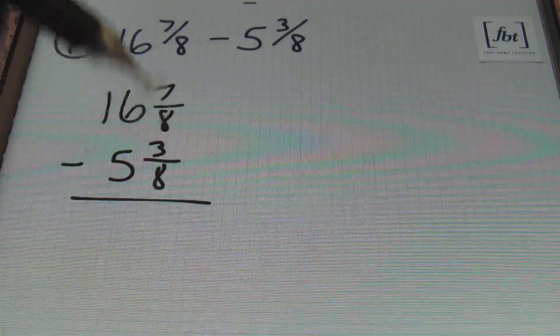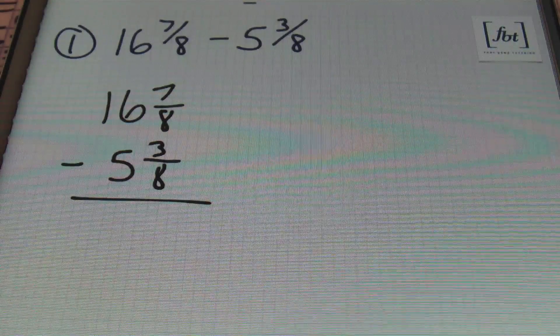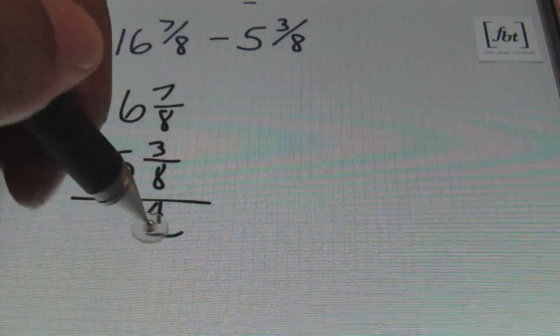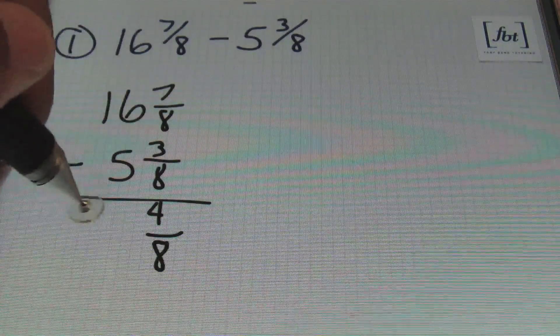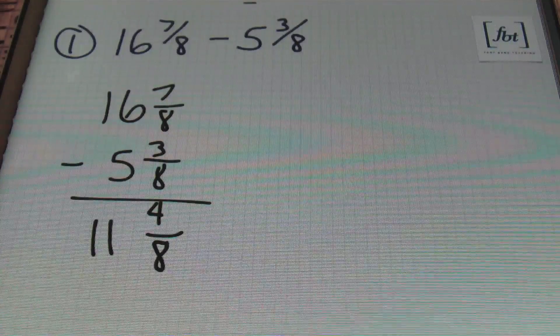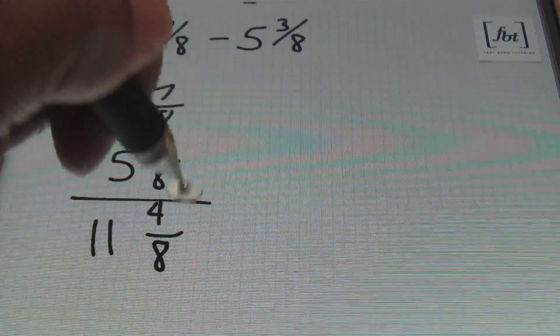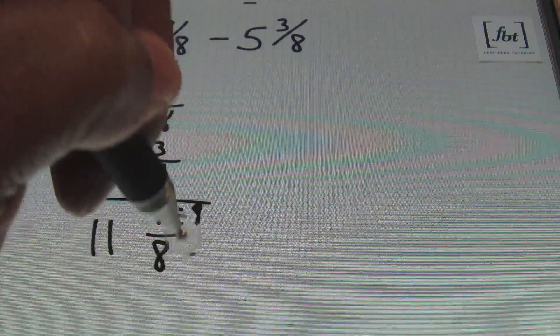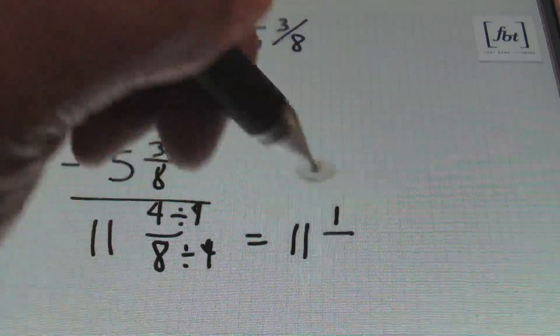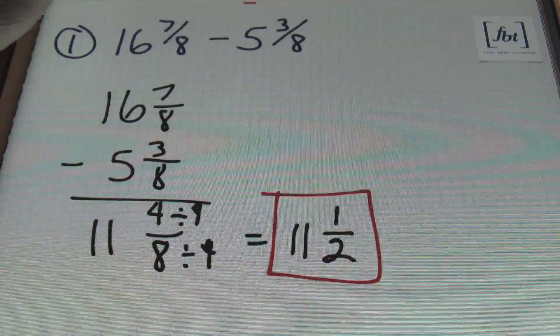You want to make sure that your denominators and your fractions are identical. They need to be the same. You have to have a common denominator there, and we do. So if that's the case, you can just go ahead and subtract. So 7 minus 3 gives me 4 over my denominator of 8, and 16 minus 5 is always 11. You're always responsible for simplifying your fractions and you never leave an improper fraction in a mixed number, ladies and gentlemen.